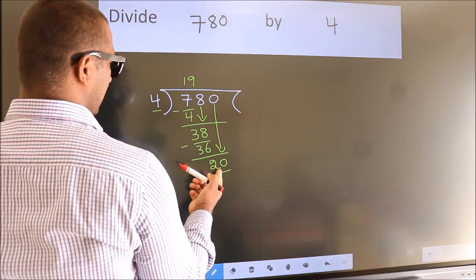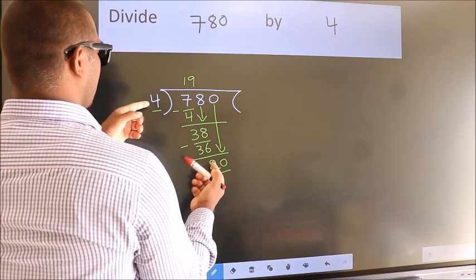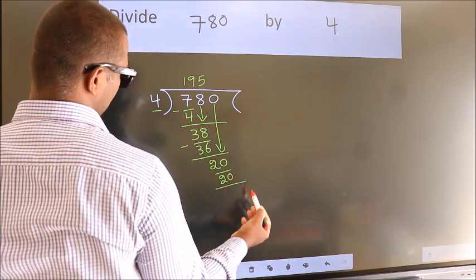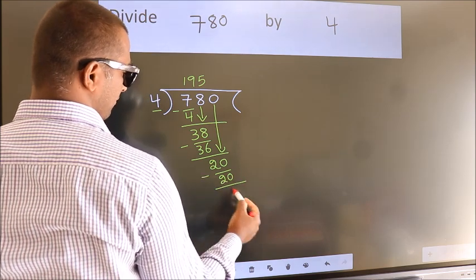When do we get 20? In the 4 table, 4 fives 20. Now we subtract. We get 0.